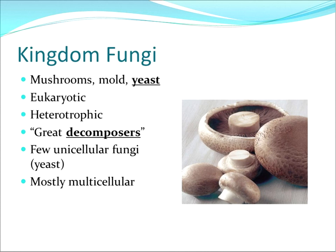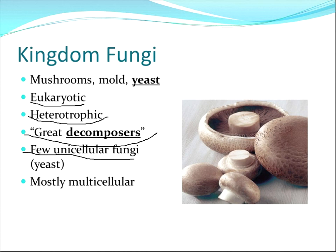The last kingdom we're going to talk about today is fungus. Examples of fungus include mushrooms — some are tasty — mold, you don't want to eat that, and yeast, which you can use to make foods like bread. They are eukaryotic just like us. They are heterotrophic just like us. They are decomposers — not like us. There are few unicellular fungi — yeast would be an example. But they're mostly multicellular, just like us. As you see, things are becoming more and more like us — between bacteria, which is the furthest from us, protists a little bit more like us, and fungus even more like us.